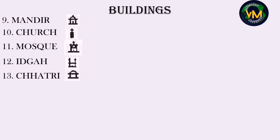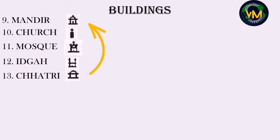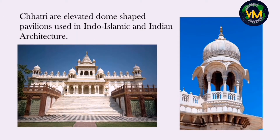Number thirteen is a chatri. There is only a small difference between the symbol for a mandir and a chatri. A chatri is an elevated dome-shaped pavilion specially used in Indo-Islamic and Indian architecture.